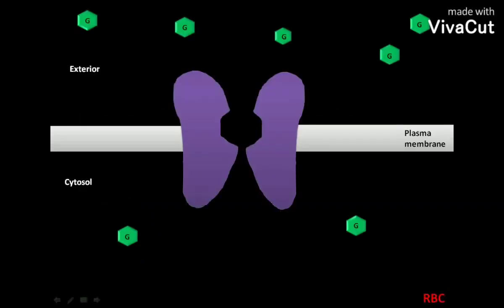The uniporter GLUT1 having outward facing conformation is found in the plasma membrane of RBC. The GLUT1 transports D-glucose,